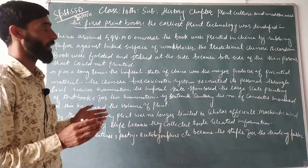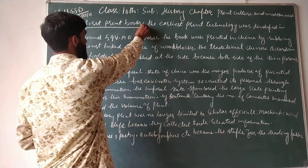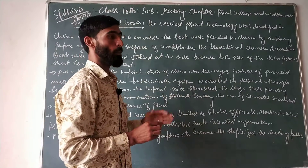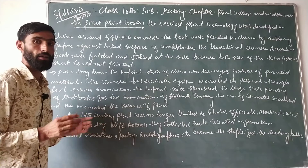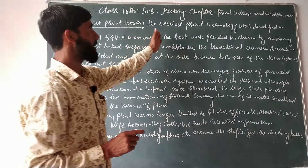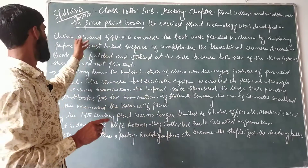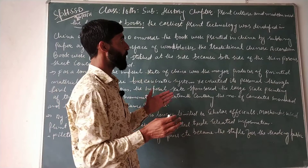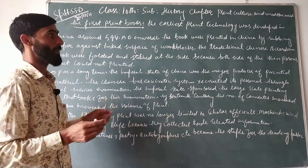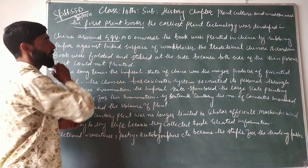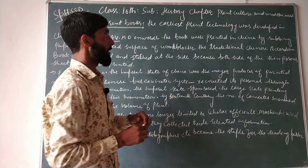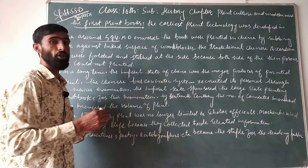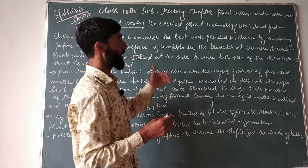The first printing system started from China — the first printed books were prepared in China. The earliest printing technology was developed in China around 594 AD onwards.